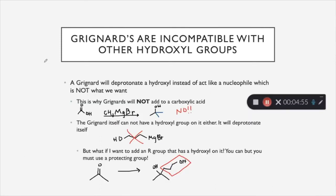In this slide, we are going to talk about why Grignards cannot attack carboxylic acids. So the first thing that I'm going to say is that a Grignard will deprotonate a hydroxyl instead of acting like a nucleophile. And this is not what we want. And this is the reason why Grignards cannot add to a carboxylic acid, because we have our carboxylic acid right here, which has a hydroxyl group on it. But this is actually not what's going to happen at all. Like I said, it will just deprotonate that hydroxyl group right there instead of adding to it. And also, the Grignard itself cannot have a hydroxyl group on it either. So it cannot react with something with a hydroxyl group, and the Grignard itself cannot have a hydroxyl group on it. For the same reason, it will deprotonate itself.